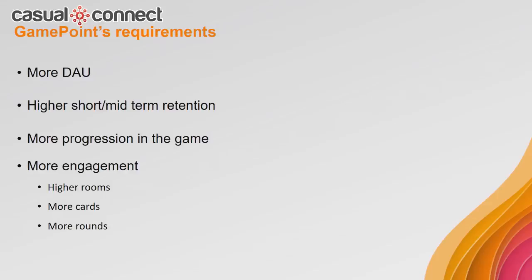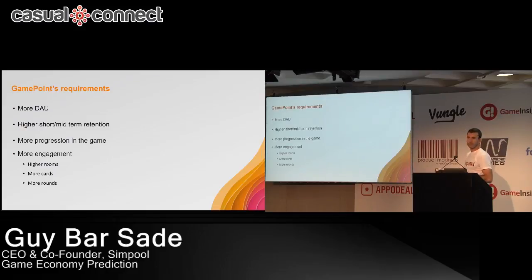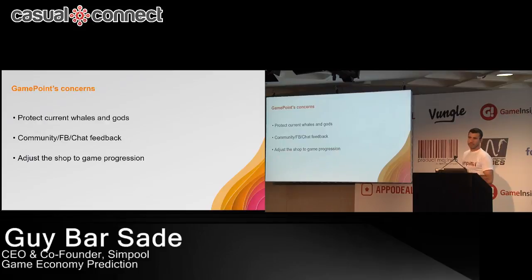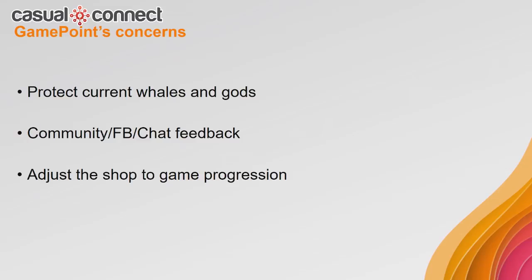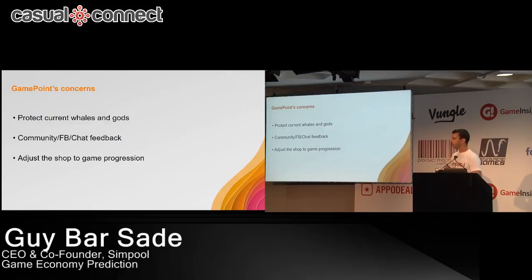Before we started, we framed the requirements from GamePoint. Basically, GamePoint wants to grow. Part of the strategy was creating short and mid-term retention, because long-term retention was already quite good — we focused on the first 30 days. We planned to integrate a real progression mechanism, increase engagement (for bingo: more rounds played, more cards, movement to higher rooms, and higher wagering). However, since this is a live game with many users, there were concerns to tackle: protecting heavy loyal users playing for many years, managing the social aspect with in-game chat and Facebook, ensuring no negative trend, and adjusting the shop to the game progression.